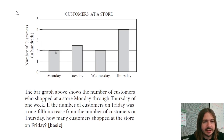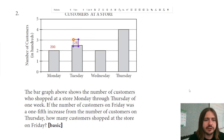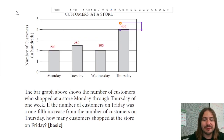On Monday there were 200 customers. On Tuesday it looks like you can't tell exactly, but it looks like it's halfway between two and three, so we're just going to estimate 250. Wednesday is back down to 200, and it looks like on Thursday is their busiest day — we get 400.